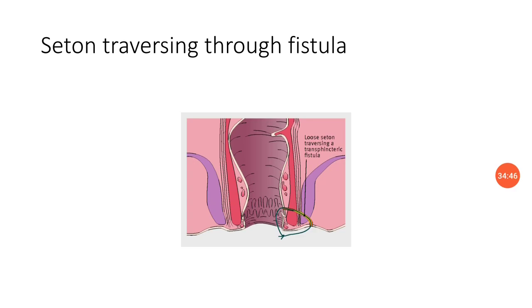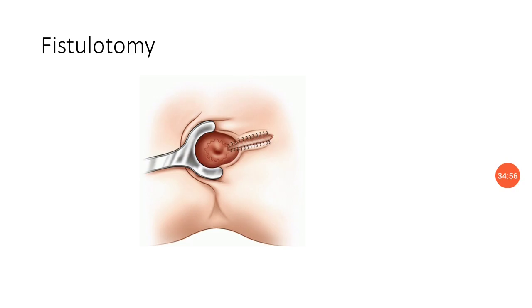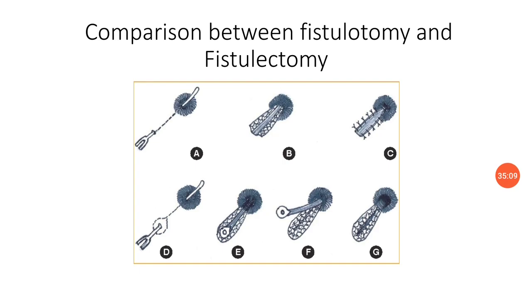A diagram shows the seton traversing through the fistula, which is tied after a few days at intervals. The setons have some caustic solutions. In fistulotomy, we cut and open the fistula track under anesthesia and full aseptic precautions. In fistulectomy, the whole fistula track is excised. The main difference: fistulotomy means cut and open the track, while fistulectomy means cut and remove the track.